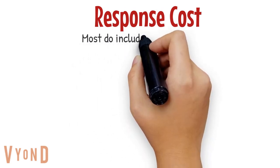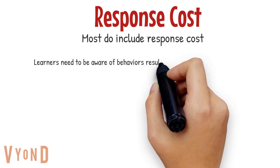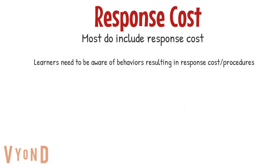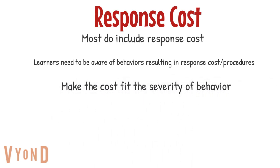Now let's talk about whether or not to include a response cost. Most token economies do not include a response cost at first. Response costs are supposed to decrease a behavior, so in theory it is a punishment procedure. Before you can implement it, make sure the learners know why they are losing tokens. It's also important to make the costs fit the severity of the behavior — for example, aggression would probably cost more than a verbal protest. Make sure the fine matches the crime.